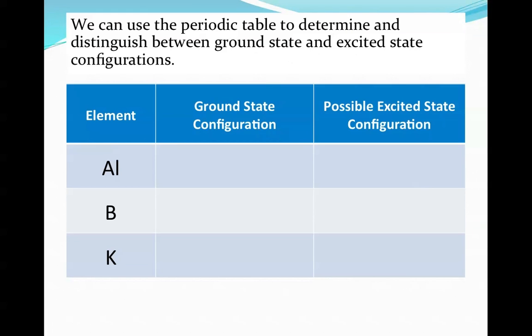So we can use the periodic table to distinguish and determine ground state and excited state configurations. Aluminum, if I look it up on the periodic table, is 2-8-3. So a possible excited state could be something like 2-7-4, where one from the second energy level has gone up to the third, or one from the third has gone up to the fourth, represented by 2-8-2-1. I have to remember that the first energy level holds 2, and the second energy level holds up to 8. So I can't go above those maximum numbers.